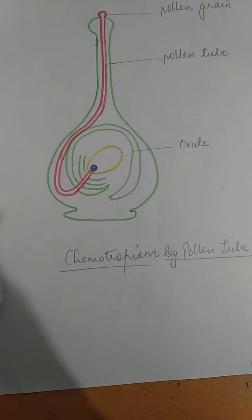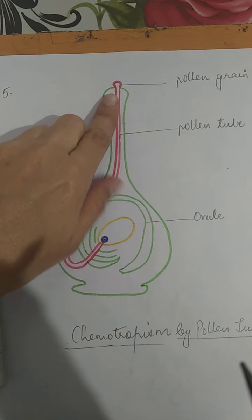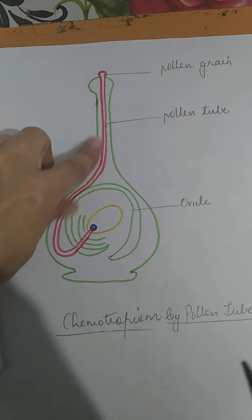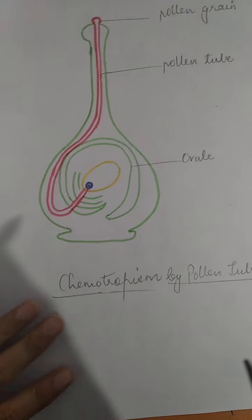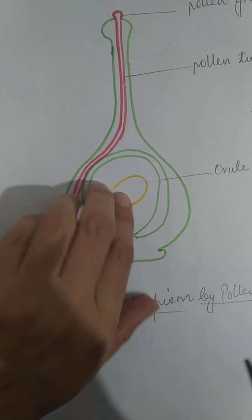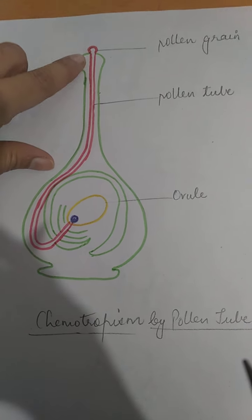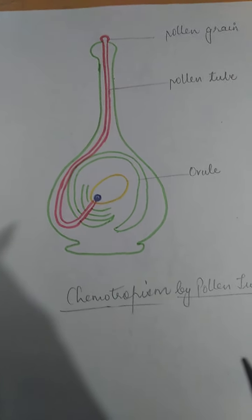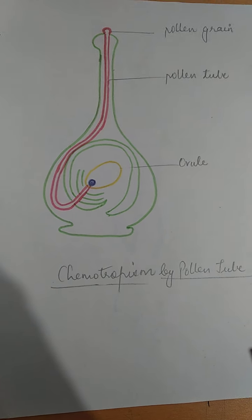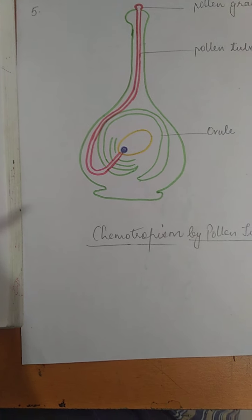The last one is chemotropism. 'Chemo' means it is related to chemicals. We can see chemotropism in plants during fertilization. Once a pollen grain falls on the surface of the stigma, it forms a pollen tube. This pollen tube grows in response to sugars and peptones secreted by the neck canal cells, and keeps growing until it reaches the ovule where the egg cell is present. This is chemotropism by the pollen tube. With this, all five tropic movements are covered. I hope it is easy for you to understand. Thank you.